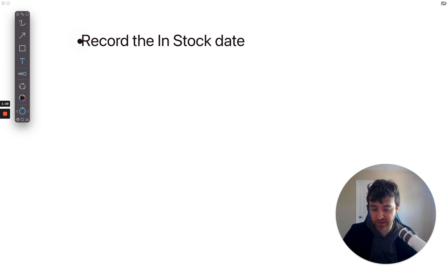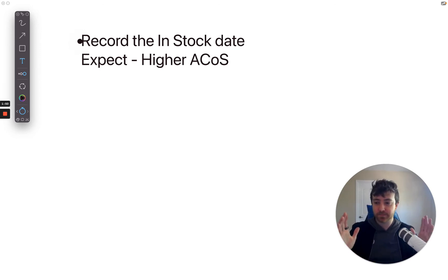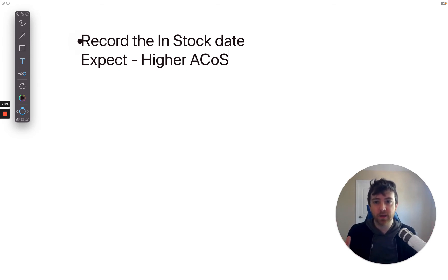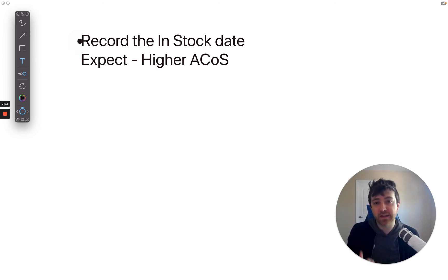Also, one thing to expect: most likely higher ACOS. When a product is out of stock and comes back in, Amazon uses sales velocity history per keyword and conversion rate history per keyword for that product. For six weeks you don't have any history. Amazon is using that data and comparing it to your competitors' data — who might have been in stock the whole time. They're going to have better keyword rank and better placement in the advertising auction, which is why you should expect a higher ACOS.